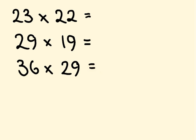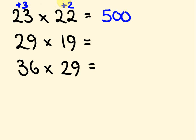Let's work through 23 times 22 using base 20. The 23 is 3 above 20 and 22 is 2 above. Cross addition: 23 plus 2 is 25. Double it: 50, so 500. Then 3 times 2 is 6. Final answer: 506.